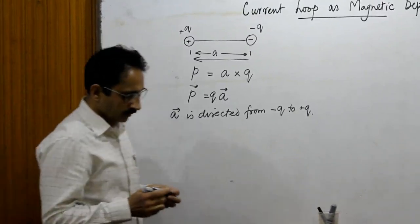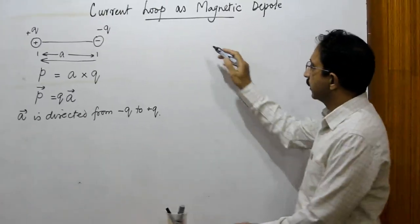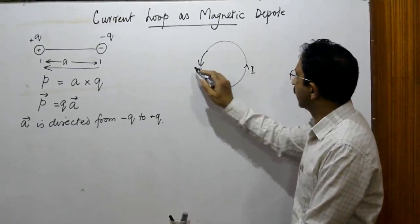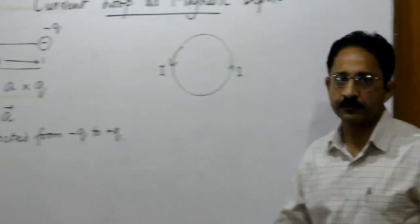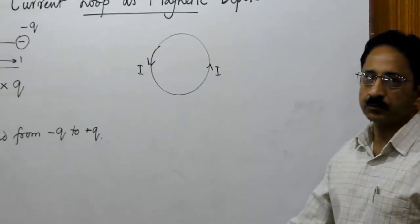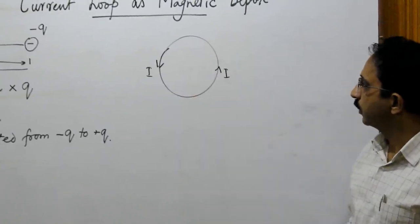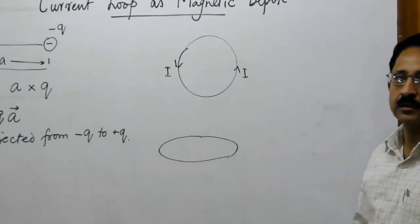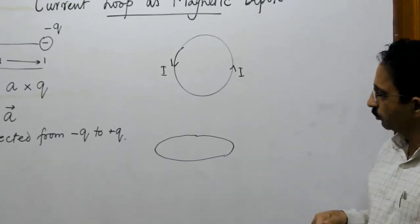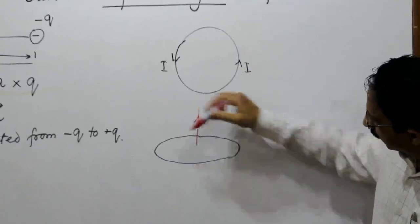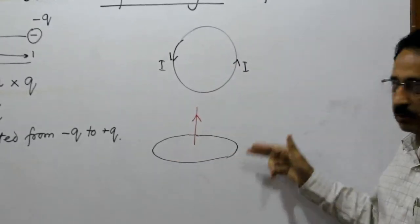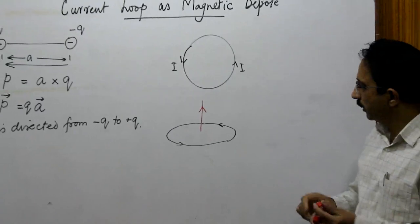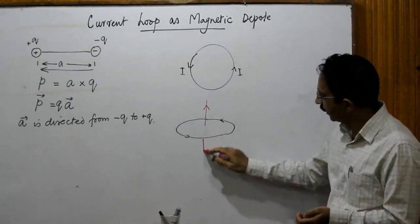When we take a current loop, this current loop behaves like this. If we have a circular path with current I flowing in it — this is a conventional current, which we take as the direction of flow of positive charge — then a magnetic field is produced by this current loop. If the current is flowing in the anti-clockwise direction, the magnetic lines will rise from one end and enter the other end.